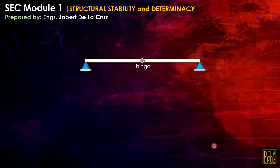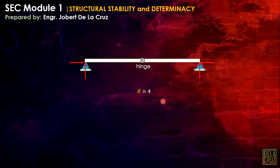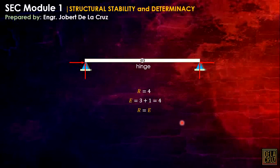For this sample problem, we have a beam with pin supports at both ends and an internal hinge in the middle. Drawing the free body diagram, at every pin we have 2 reactions, giving us 4 total reactions. The number of equilibrium equations is 3 plus E sub C. Since there is a hinge, we add 1, giving E equals 4. So R equals E, which might suggest statically determinate.